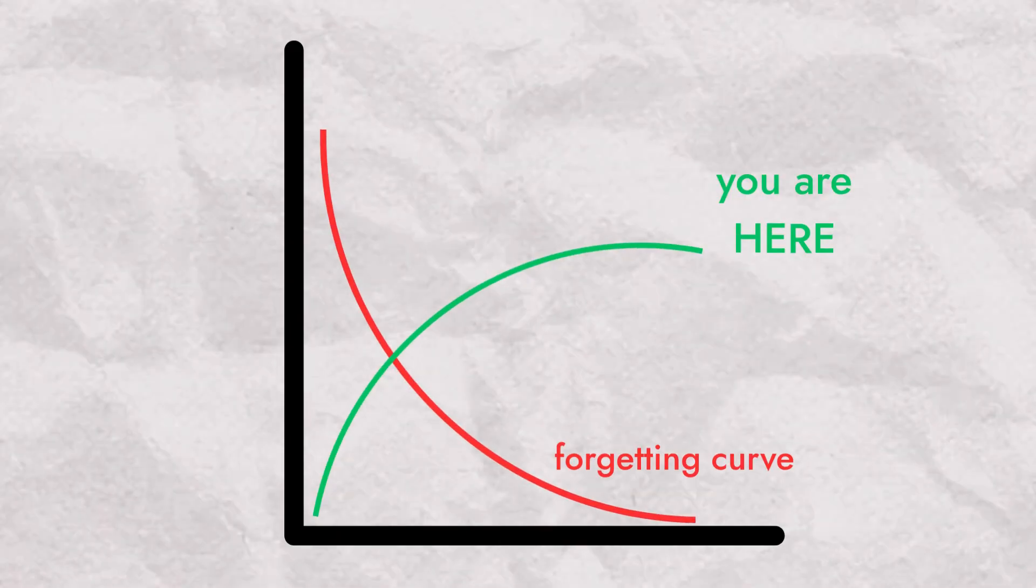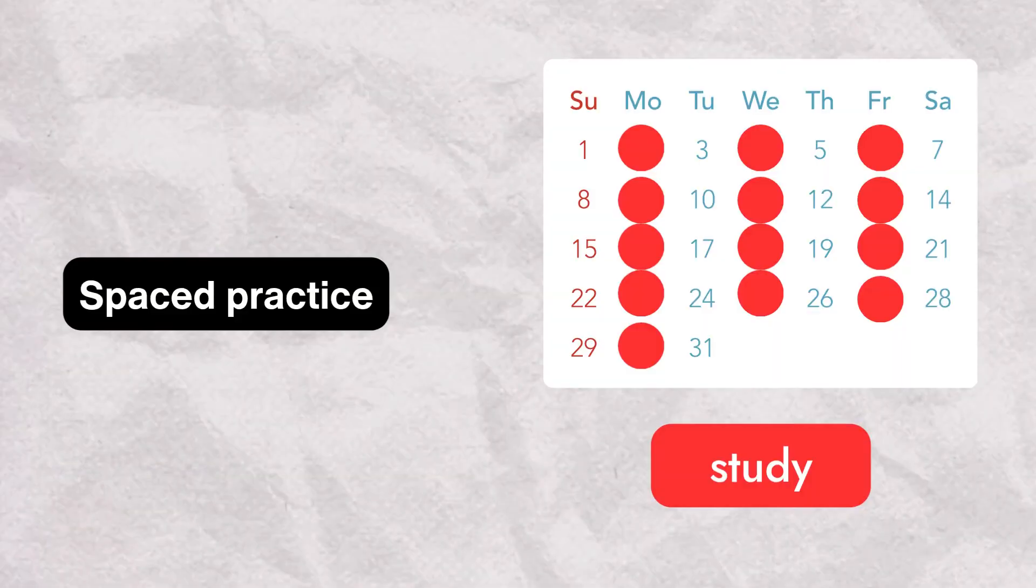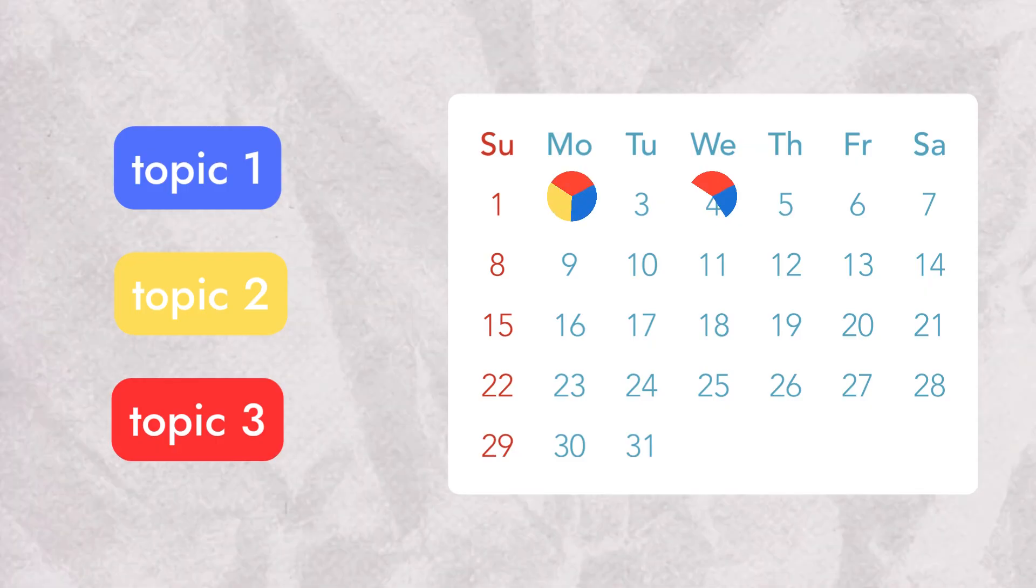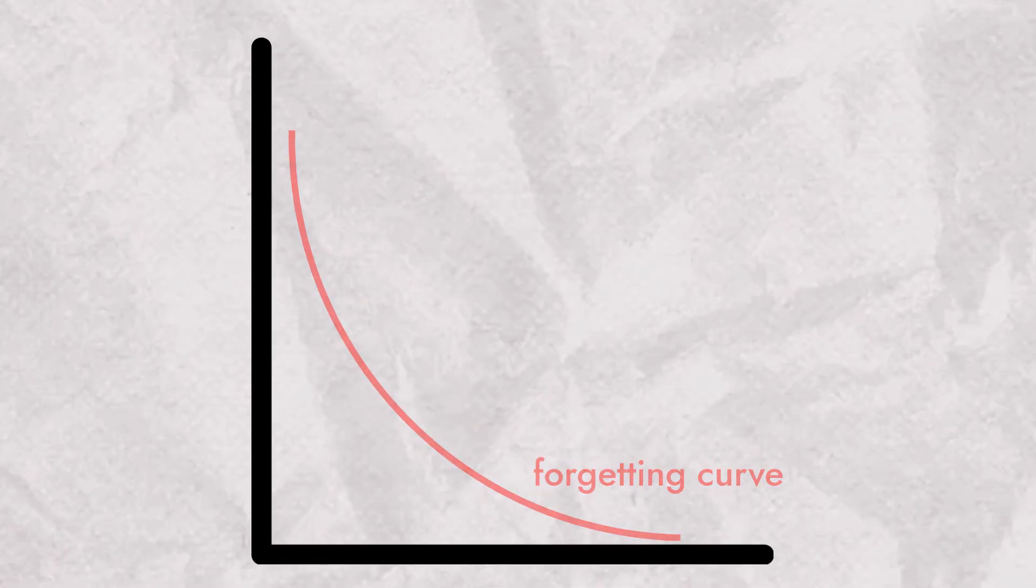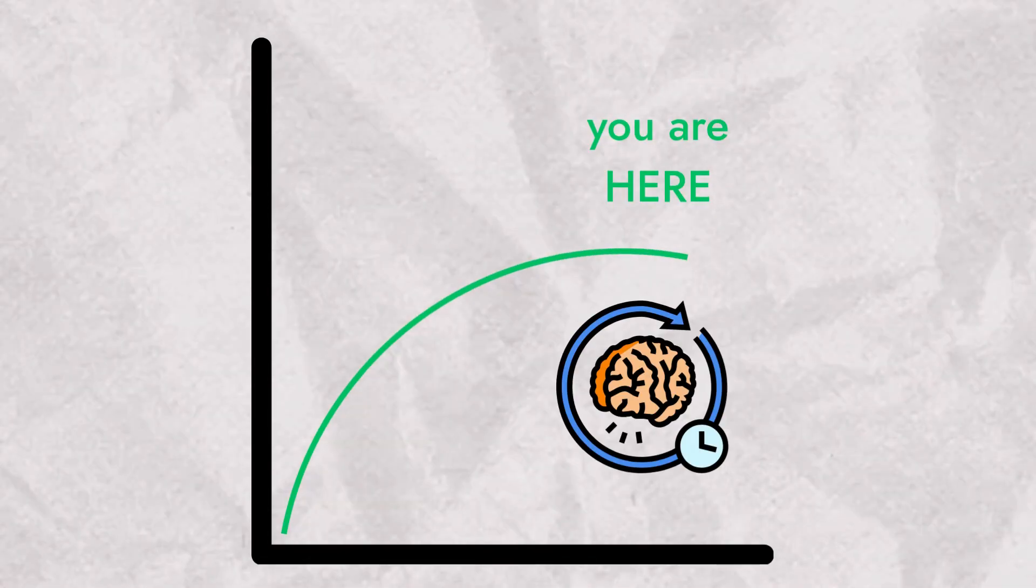Here's the good news. You can fight the forgetting curve. The key is reviewing information at spaced intervals. Each time you revisit material, your brain strengthens the memory traces and resets the forgetting curve. Instead of dropping off, the curve flattens and you remember for weeks, months, even years.